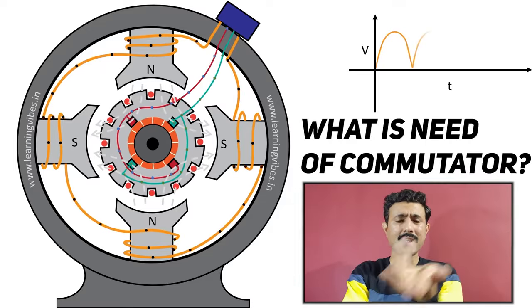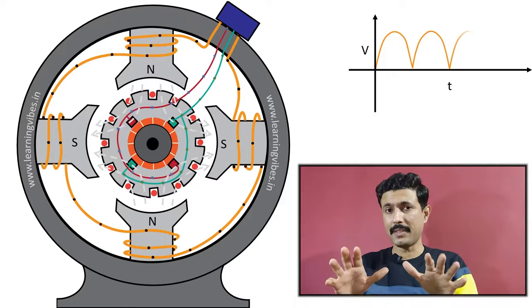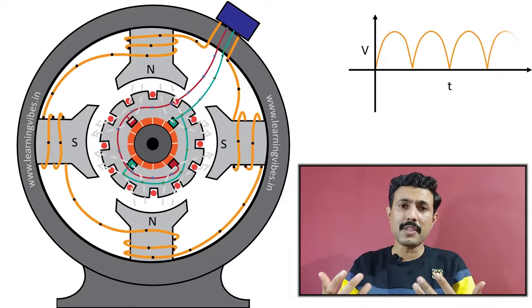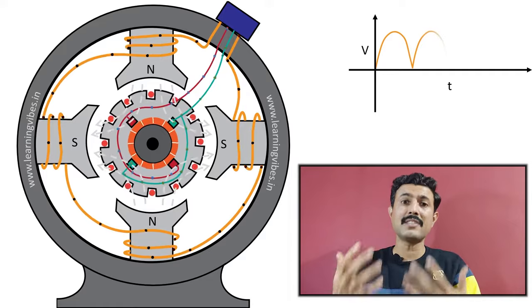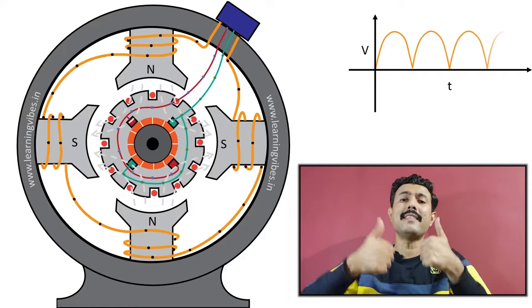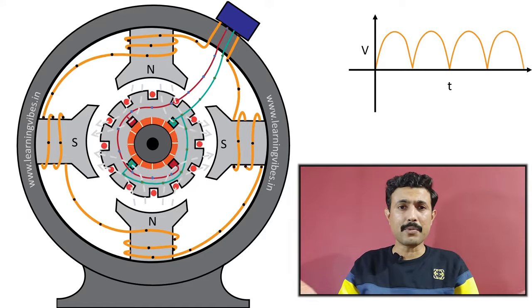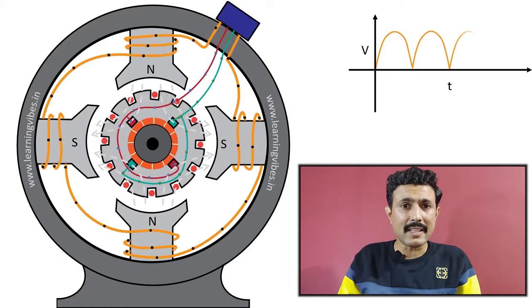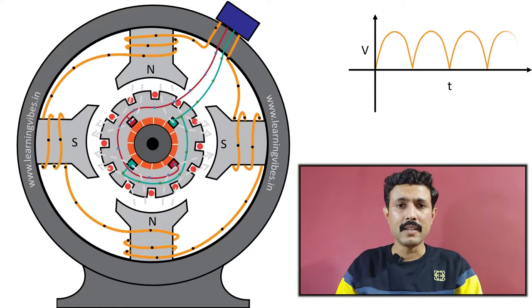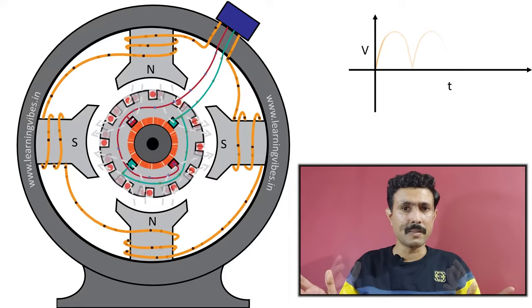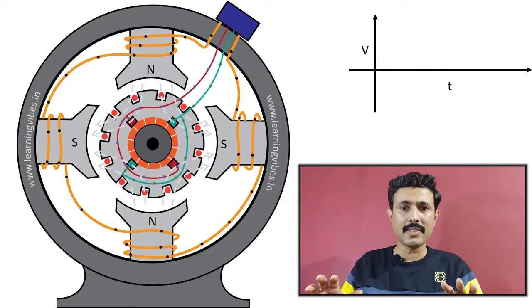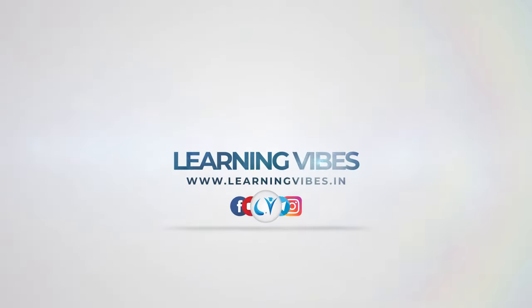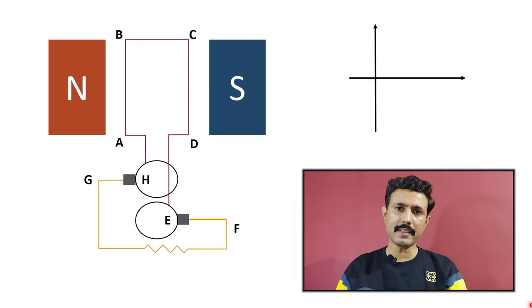What is the need of a commutator segment in a DC generator? Whenever you try to induce EMF through a rotating machine, it always produces AC waveforms — AC voltage. But in this simulation, you can see that it produces DC voltages. So how does it do that? That is the fundamental question, and the answer is the commutator segment. In this video we are going to learn that using simulation.